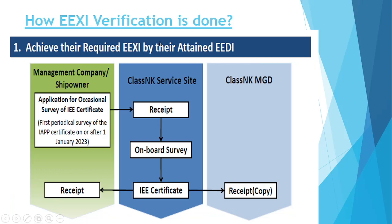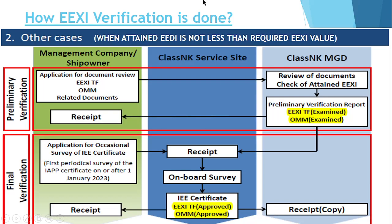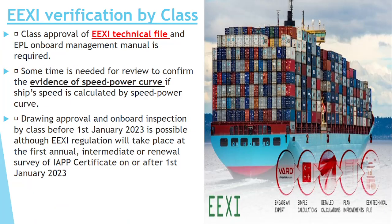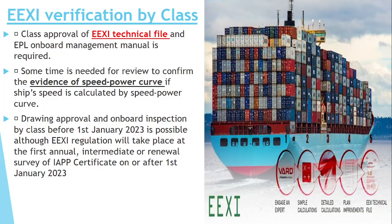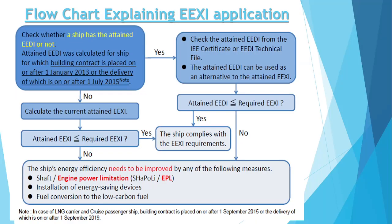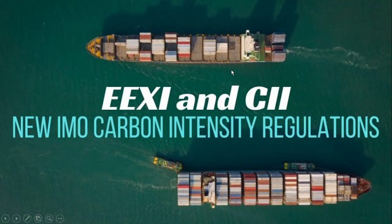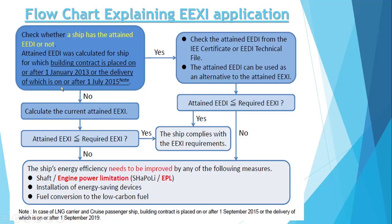It basically consists of two procedures. Procedure one is when the required EXI is achieved by the attained EDI. Procedure two is when the attained EDI is not less than the required EXI. We will see these two procedures, and after that what verification will be done by the class and what is the cost when the verification is done by the class.